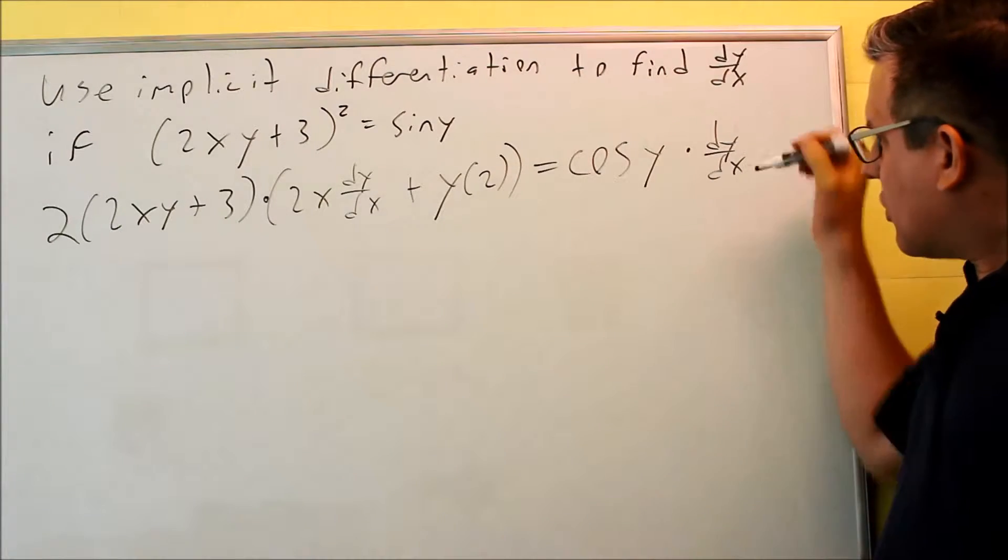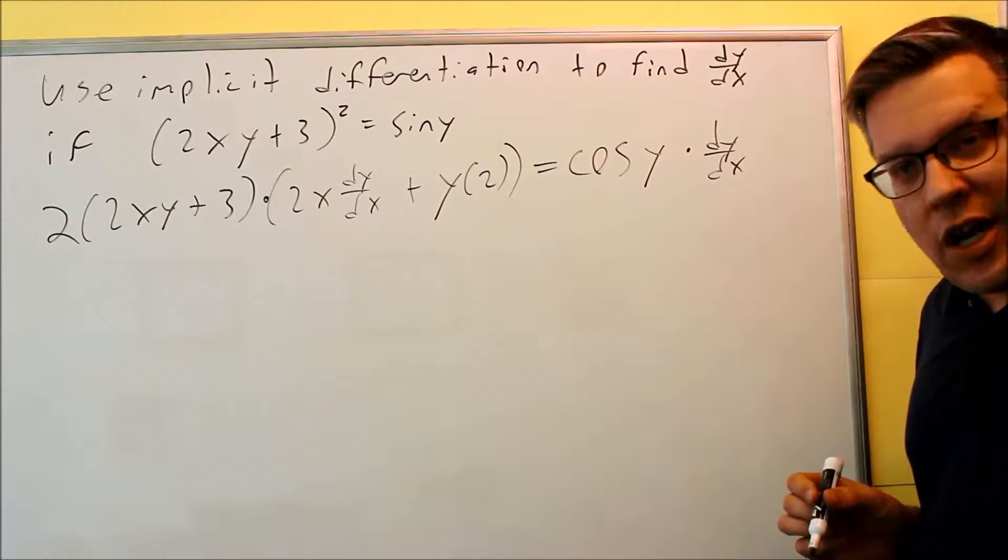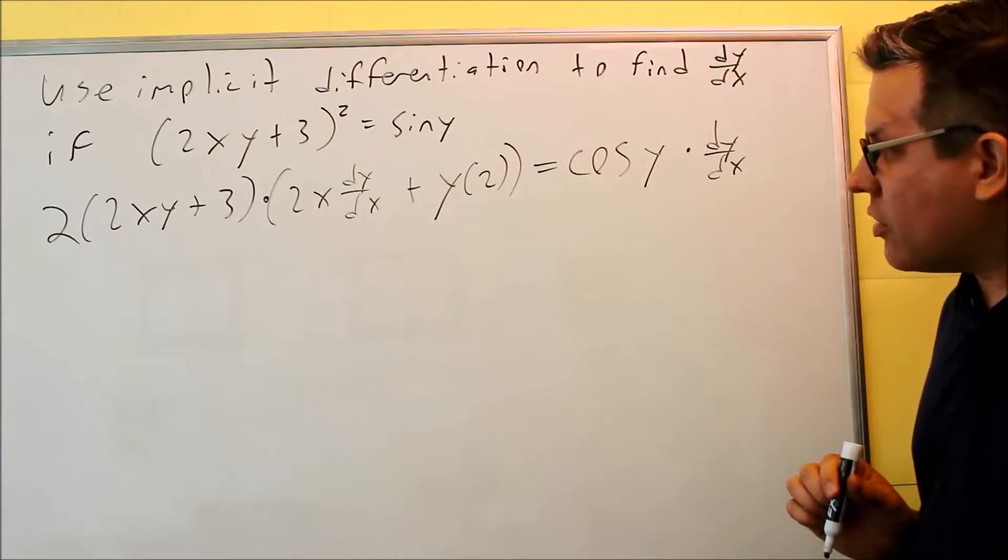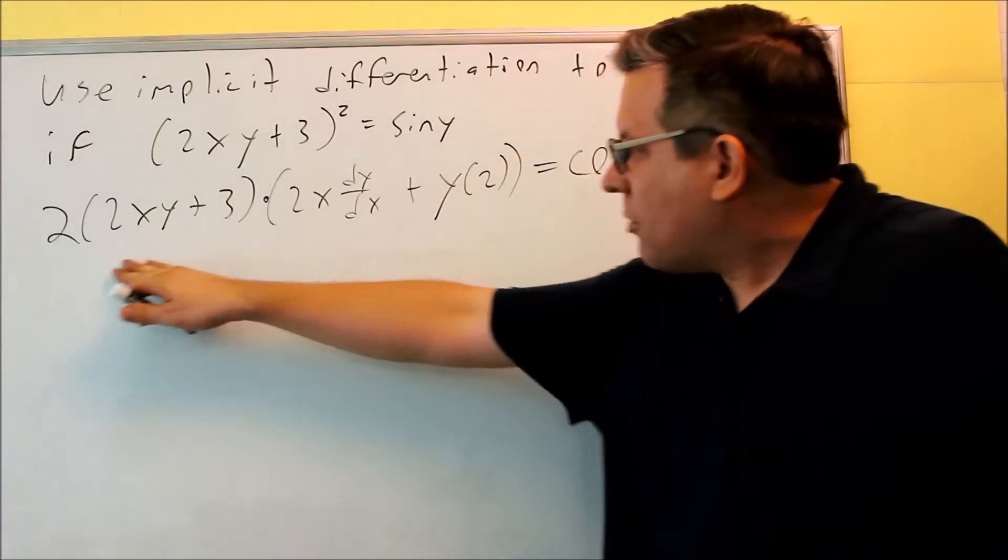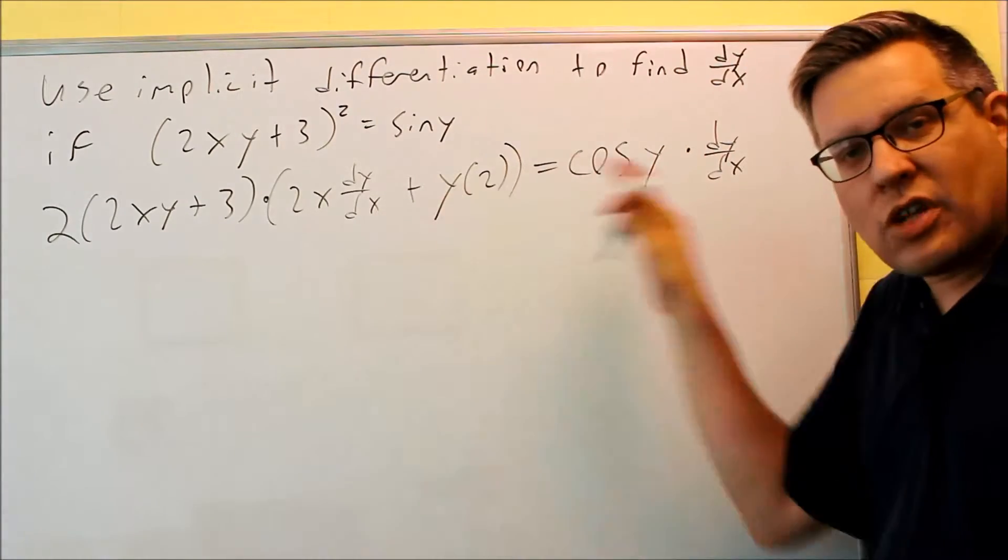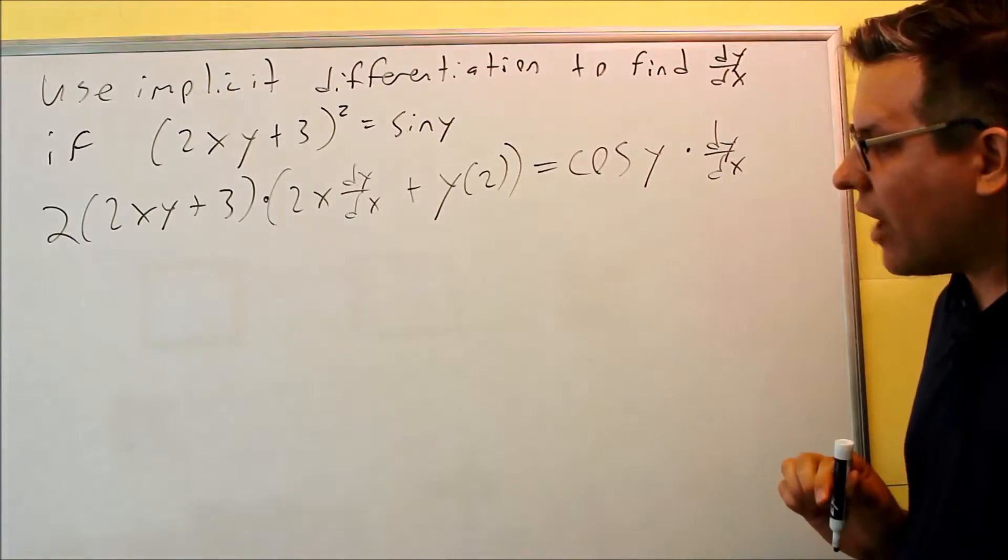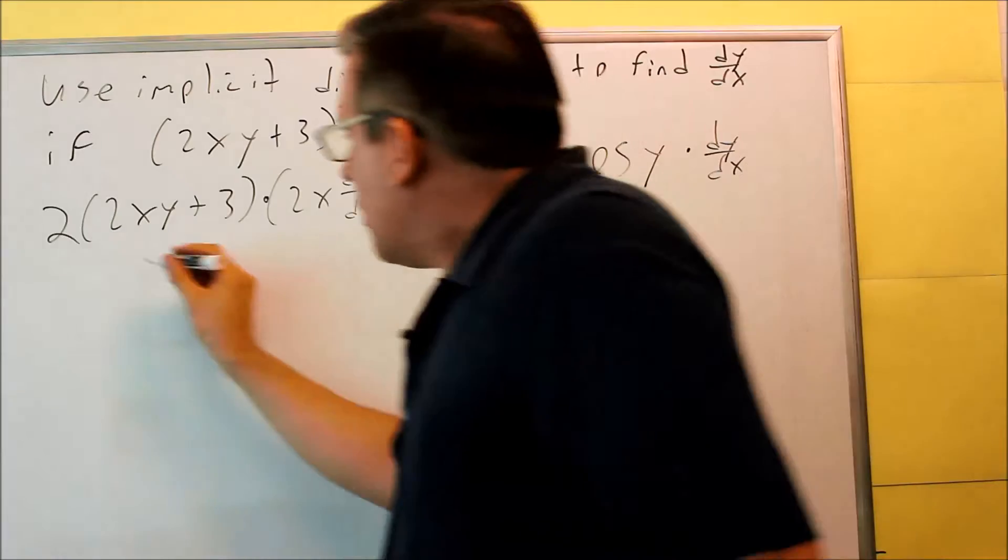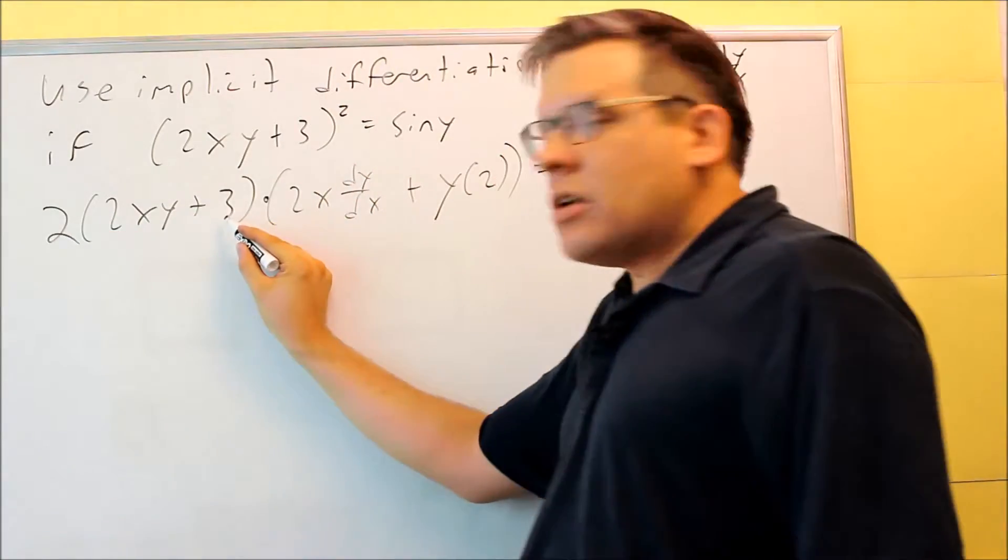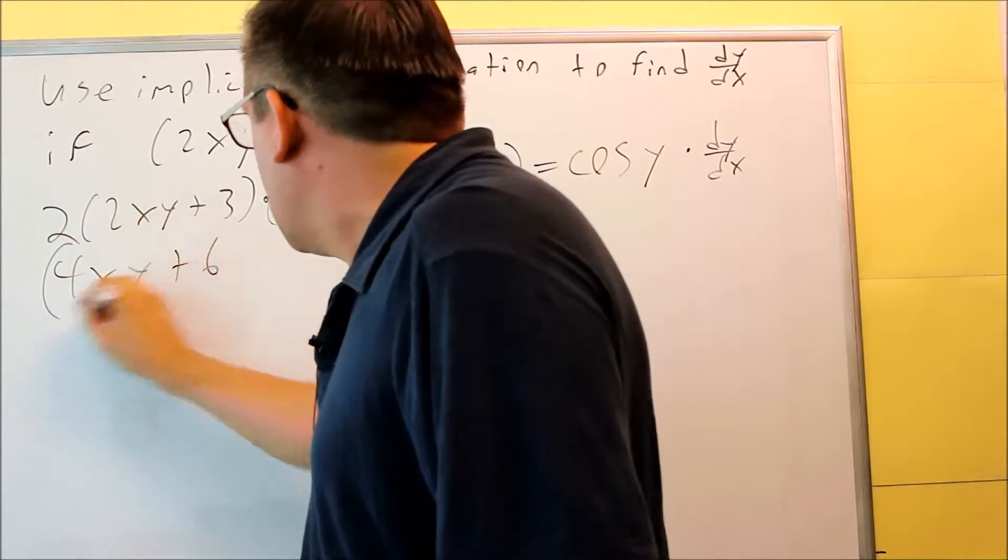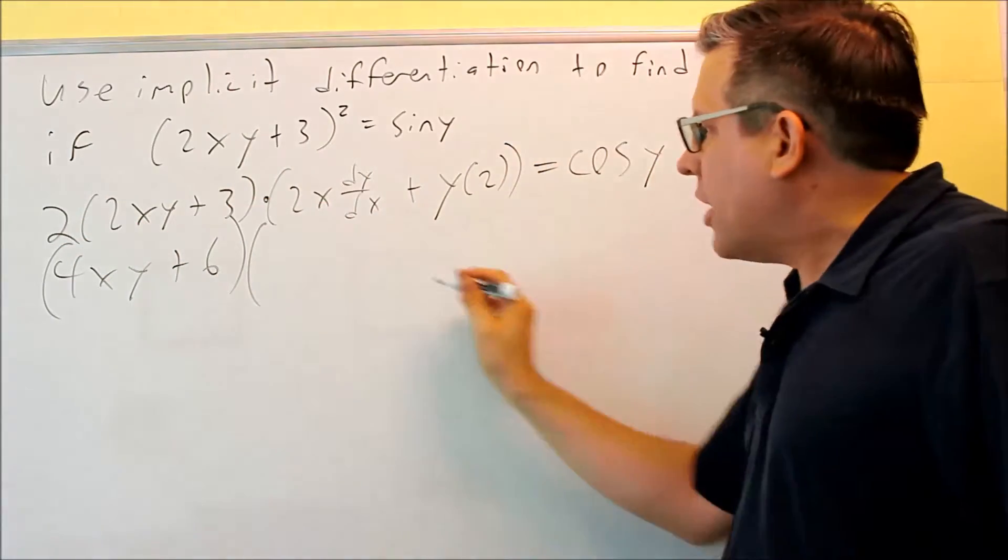So I need to get anything that has dy/dx in it, I want to have that on one side of the equation. So unfortunately, I'm going to have to do some multiplying with this one because I want to create separate terms so that way I can move them across the equal sign if I have to. So I'm actually going to foil all this together and multiply it. So I'm going to multiply the 2 times all this first, get that out of the way. So 4xy + 6, and then we're going to multiply it by this.